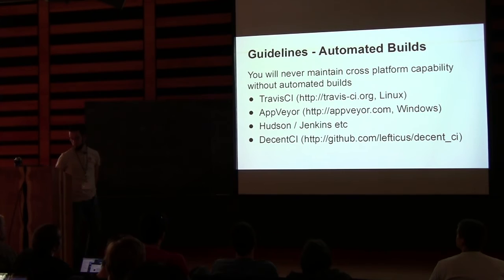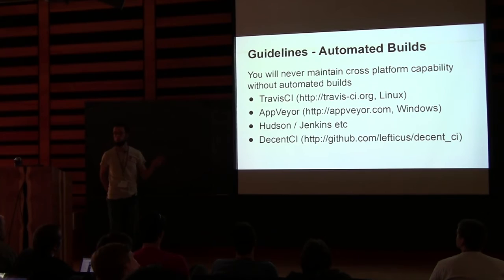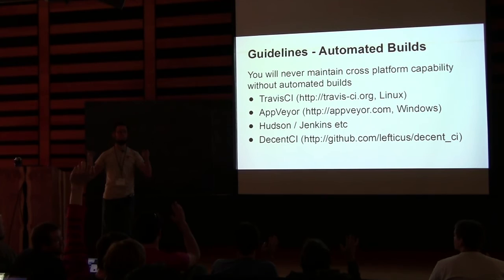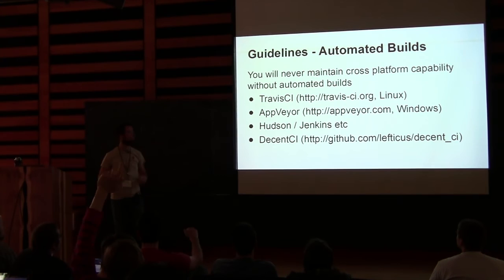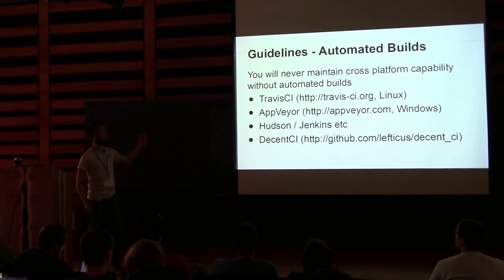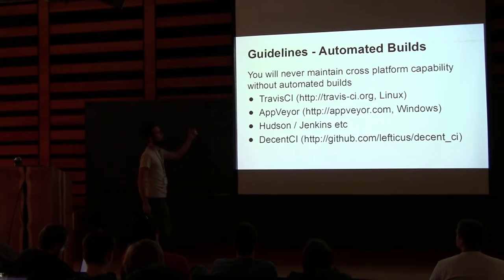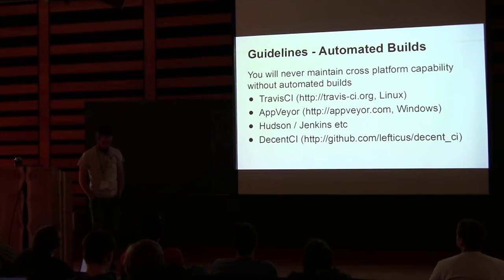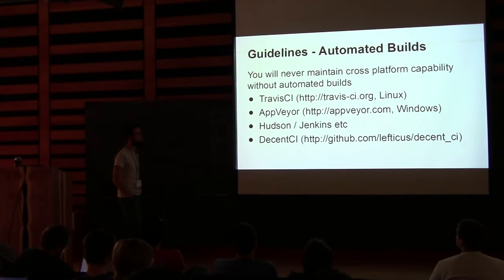I've found that you'll never maintain your ability to have a cross-platform application without some form of automated build helping you out. How many people have code hosted on GitHub? How many are using Travis for automated builds? Anyone using AppVeyor? AppVeyor does Windows builds, works almost exactly like Travis — you set up an AppVeyor.yaml file in the root of your repository, link it with GitHub, and every commit triggers builds. There's no reason not to be using this. It now has support for the Visual Studio 2015 release candidate.